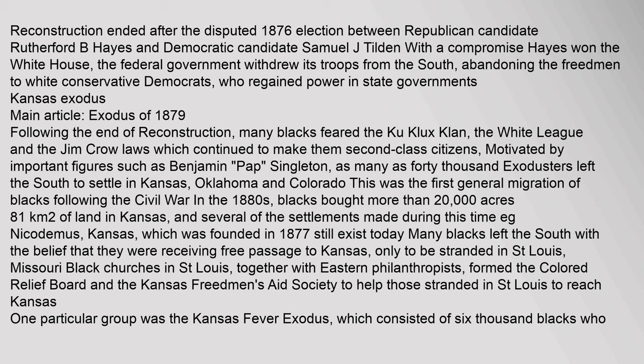Reconstruction ended after the disputed 1876 election between Republican candidate Rutherford B. Hayes and Democratic candidate Samuel J. Tilden, with a compromise. Hayes won the White House. The federal government withdrew its troops from the South, abandoning the freedmen to white conservative Democrats who regained power in state governments.